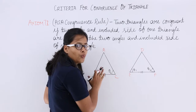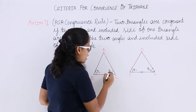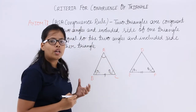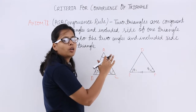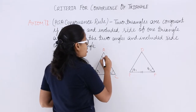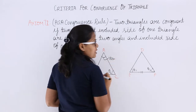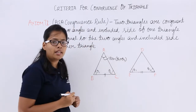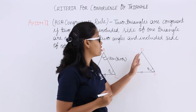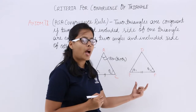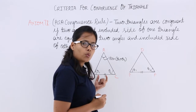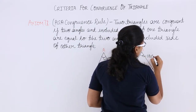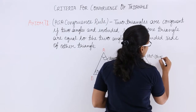If two angles of one triangle are equal — theta 1 and theta 2 — then what will be the third angle? As you already know, in a triangle the sum of three angles is equal to 180 degrees. So the third angle is going to be 180 minus (theta 1 plus theta 2). The same applies to the other triangle, since both triangles share the same two angles, their third angle will also be 180 minus (theta 1 plus theta 2).